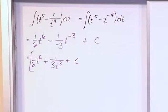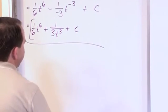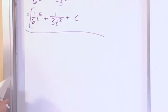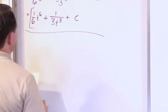And so the answer you get is 1/6 t to the 6th power plus 1/3, or 1 over 3t cubed plus a constant. So not too bad. You just have to apply that rule to whatever you see.